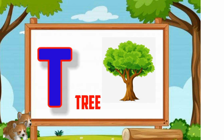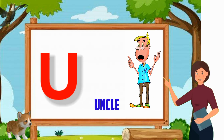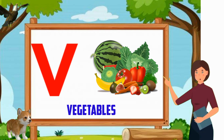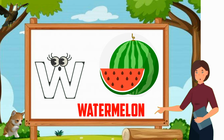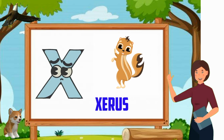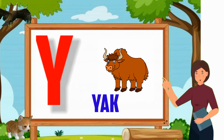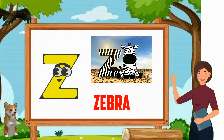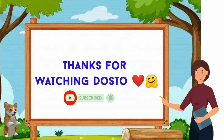T for tree. U for onion. V for vegetable. W for watermelon. X for zero. Y for rat. Z for zebra.